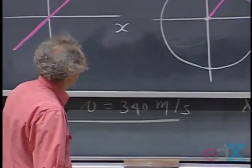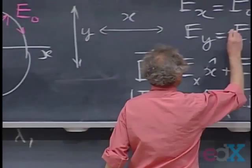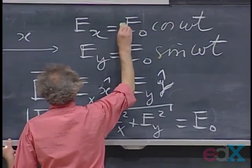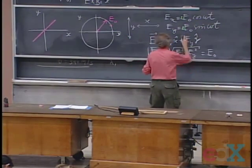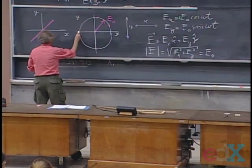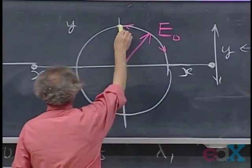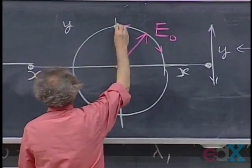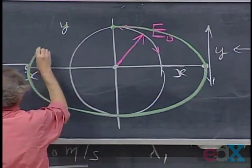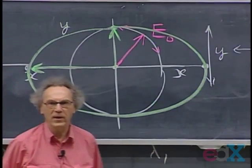You can turn this into elliptically polarized radiation by simply making the amplitudes unequal — for example putting a factor of two in the x-direction. That means you can go twice as far in the x-direction as in the y-direction, so now the E-vector traces an ellipse. This is elliptically polarized radiation.